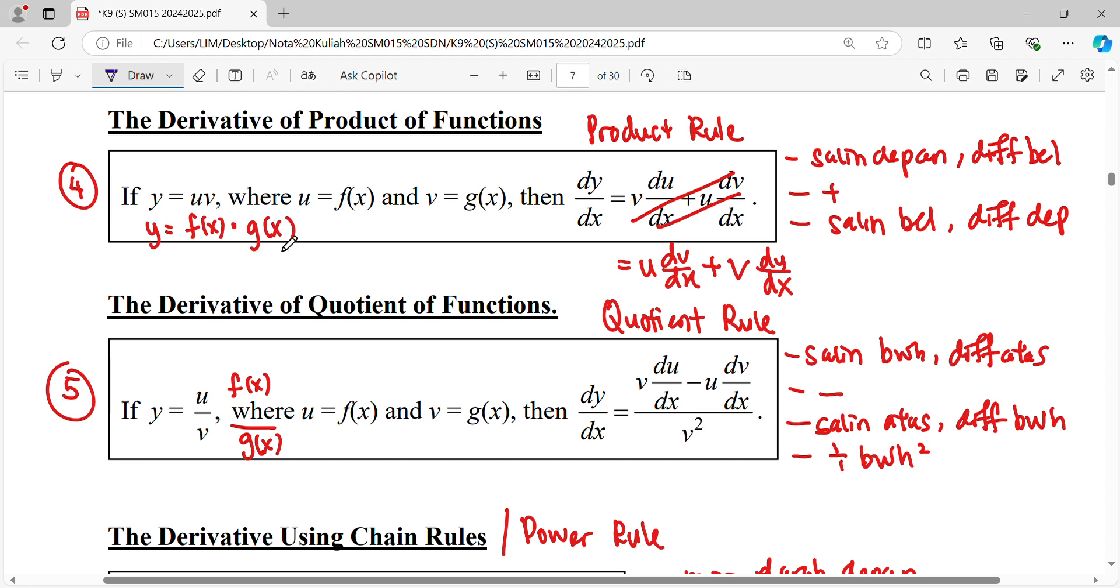Okay, so the product rule said, saling depan, different shape yang belakang, tambah saling yang belakang, different shape depan.